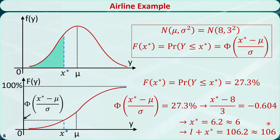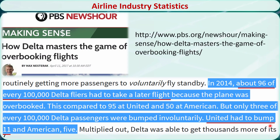We just saw the pure calculation in the most simplified case. What happens in the real world is much more complicated, and the revenue management team in a company has to handle many other factors before implementing overbooking strategies. While we are on the subject, here are some interesting statistics about overbooking in the airline industry.